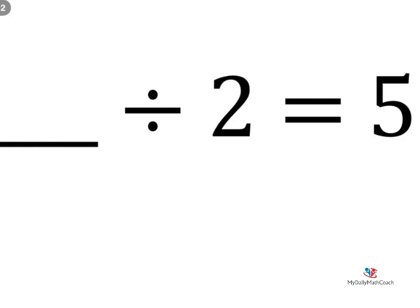Alright, here is a problem. We have some number, we're going to say blank, divided by 2 equals 5. Now in the world of algebra, when you get a little bit older, this might say x, x divided by 2 equals 5. Don't let that throw you—that's really the same thing as blank, or some number divided by 2 equals 5.